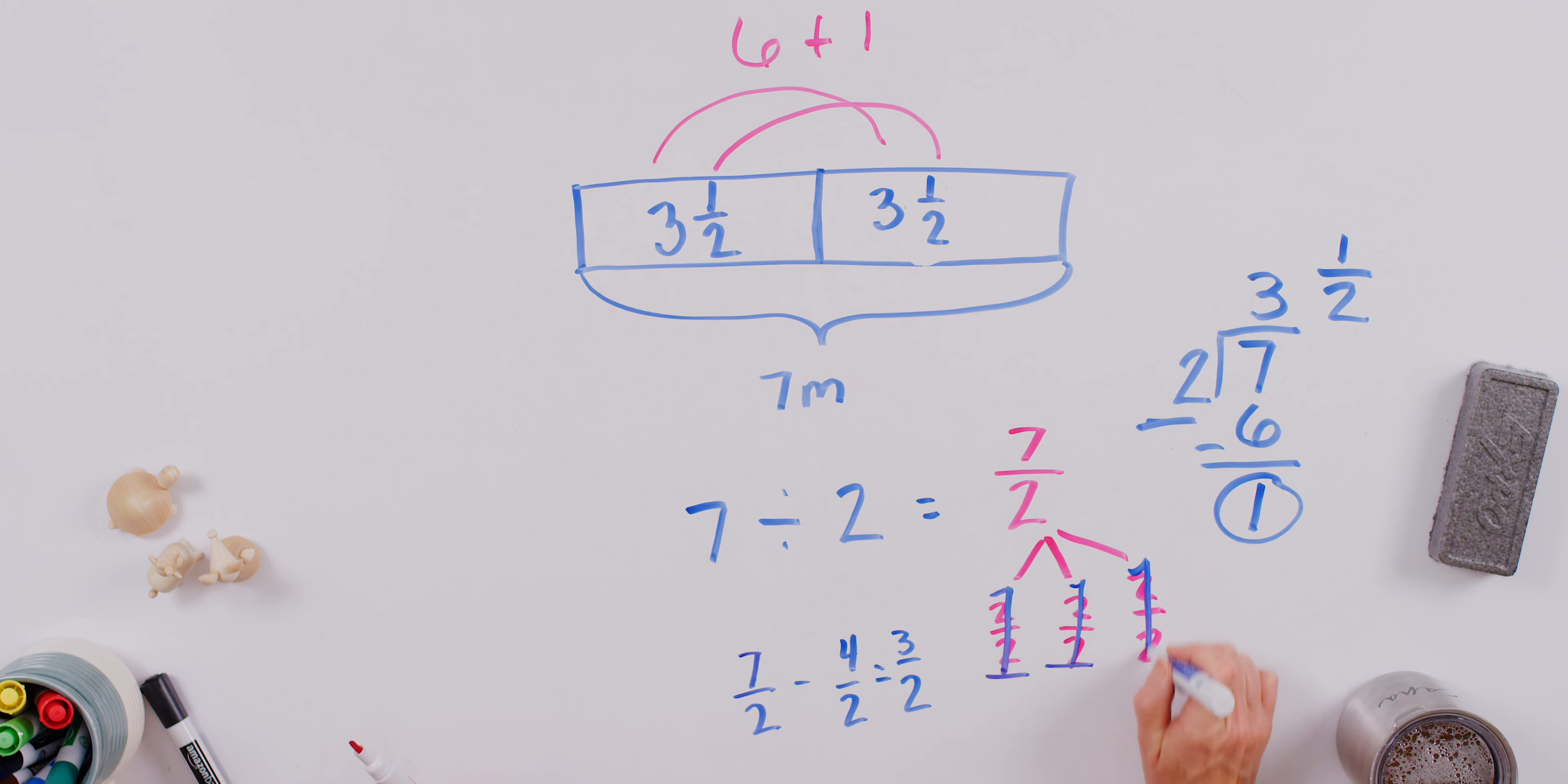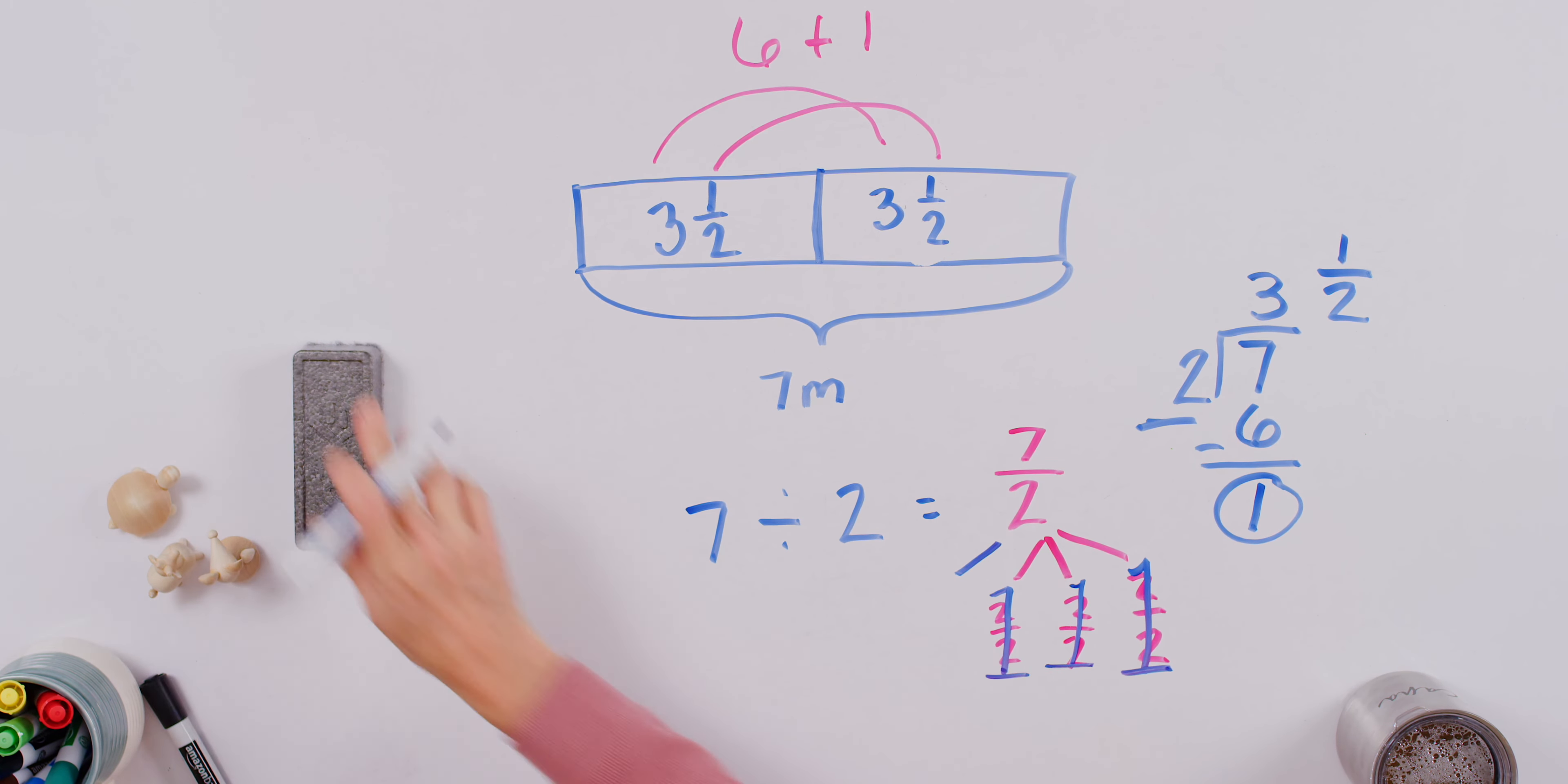Okay, another secret ninja one. And then what do we have left? Then we have our one half. Let me erase this so it doesn't get in the way. And we've got our one half left.